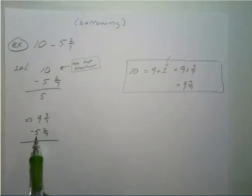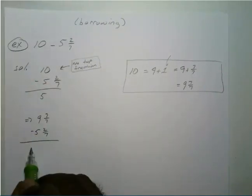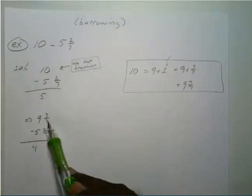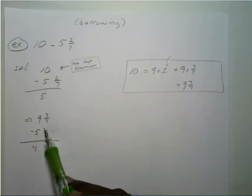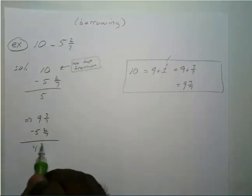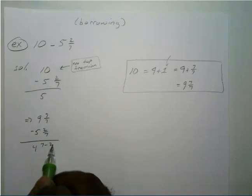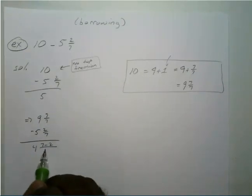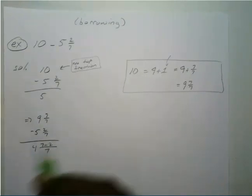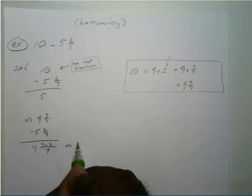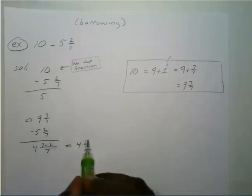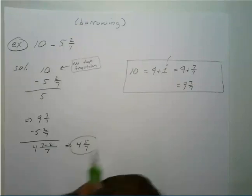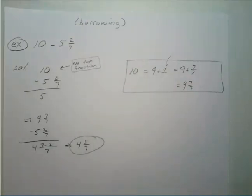Now we subtract: nine minus five is four. We have the same denominator, so seven minus two over seven gives five-sevenths. That gives us four and five-sevenths, which cannot be simplified further. That is our final answer.